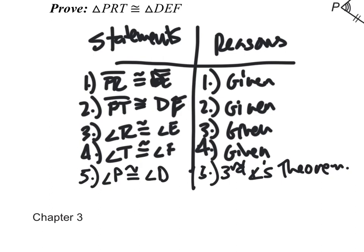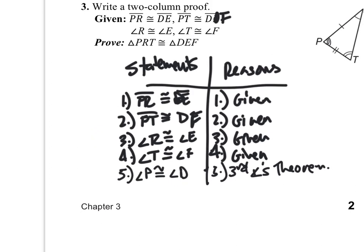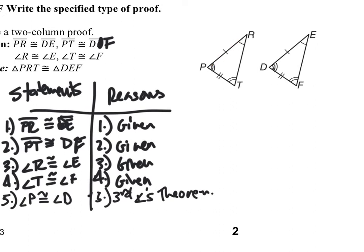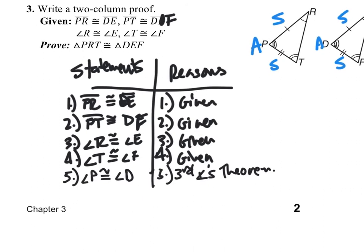Because in that picture now I have two pairs of corresponding sides that are congruent and their included angle. I have a side, an angle, and a side that are all congruent to the corresponding side, angle, and side in the other triangle. So my sixth statement is that triangle PRT is congruent to triangle DEF.